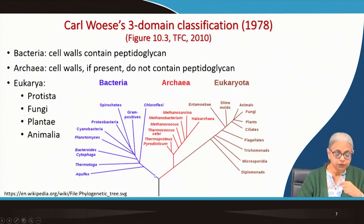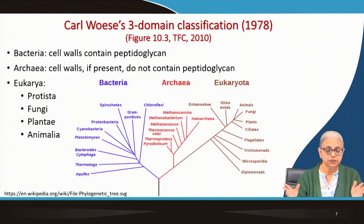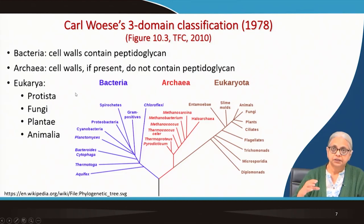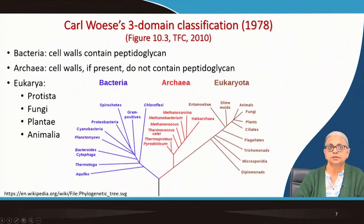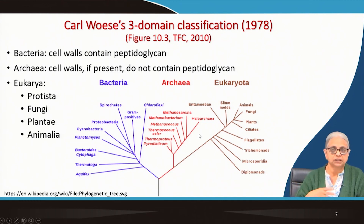The phylogenetic tree or tree of life shows the last universal common ancestor at the base. Based on ribosomal RNA sequencing, there are three major branches — the three domains: Bacteria, Archaea, and Eukarya. Bacteria and Archaea are both prokaryotes. The key difference between them is that peptidoglycan is present in eubacteria, while archaeobacteria have cell walls but do not have peptidoglycan. Archaeobacteria are generally not found in the normal environment around us.